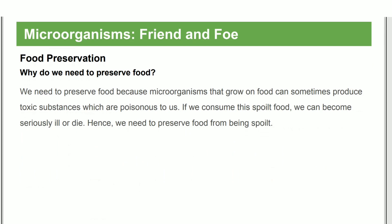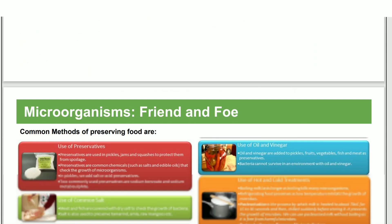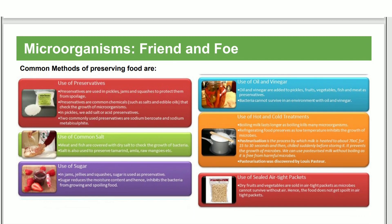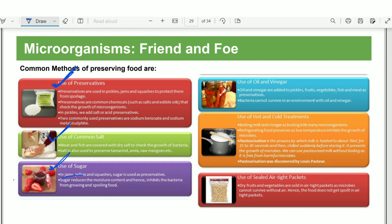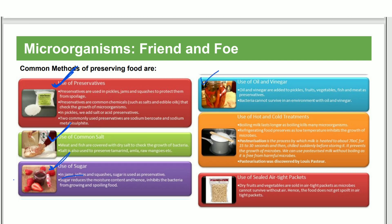Food preservation is important to keep food safe. Spoiled food can be toxic and poisonous — if we consume spoiled food, it can harm us. Preservatives are used to preserve food. Common preservatives include common salt, sugar, and vinegar, which prevent the growth of microbes.